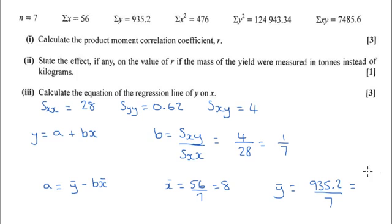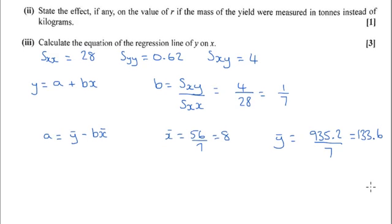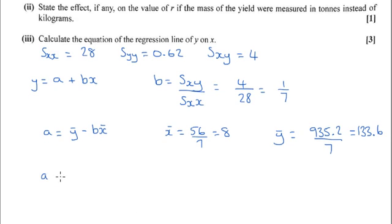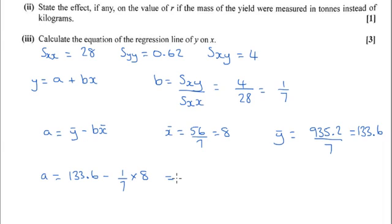y-bar equals 133.6. So then a is 133.6 minus a seventh times 8, so 133.6 minus 8 over 7, which is 132.6.